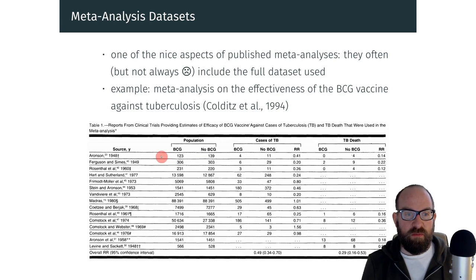So for each of the studies included in this meta-analysis, we have the number of participants in the vaccinated and in the control group, the number of tuberculosis cases in each of these two groups, based on which we can compute an effect size measure like a risk ratio, which we can then meta-analyze.